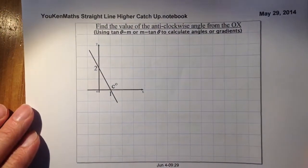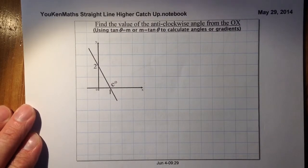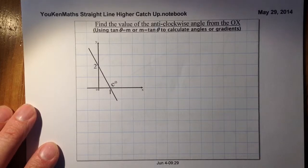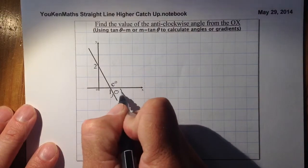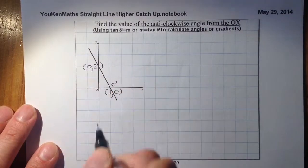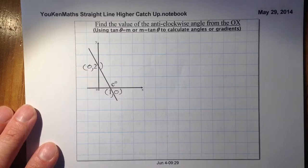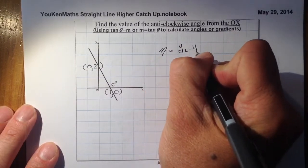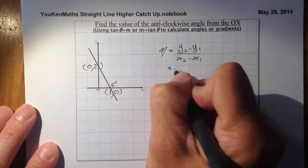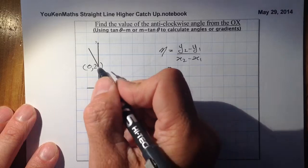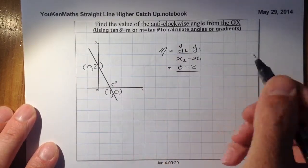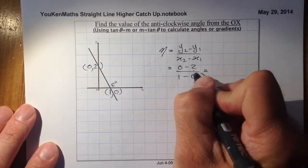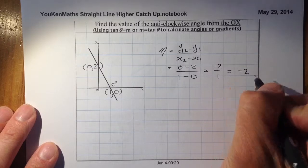What if we have a line sloping downwards from left to right? That gives a negative gradient. Using the coordinates (1, 0) and (0, 2), I'll work out the gradient using the formula. Substituting: (0 minus 2) over (1 minus 0) gives minus 2 over 1, so the gradient is minus 2.